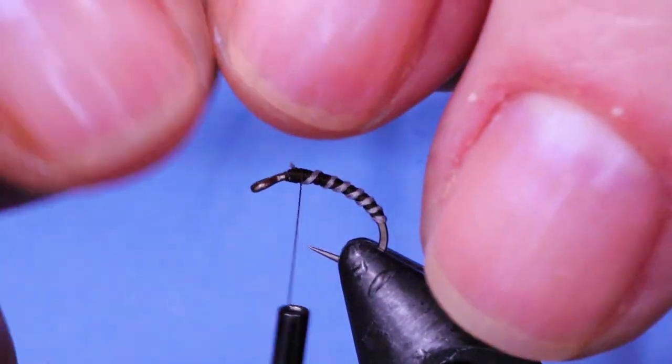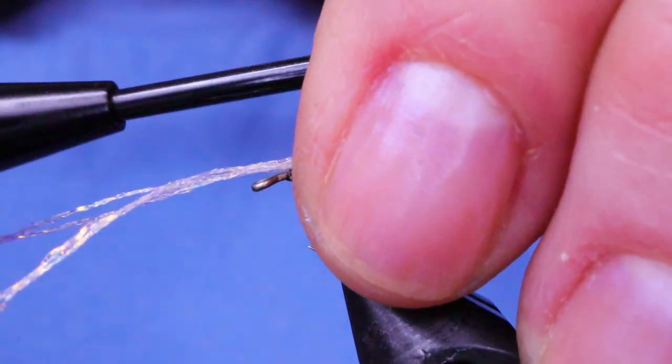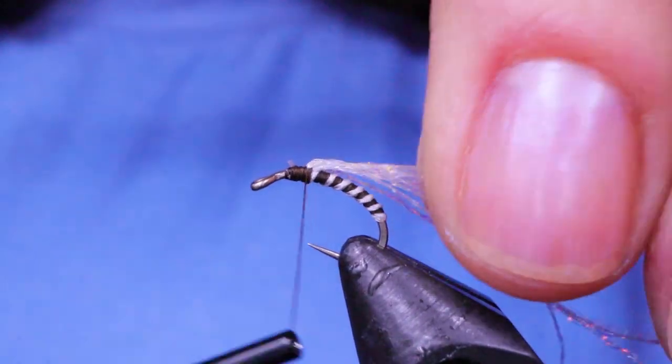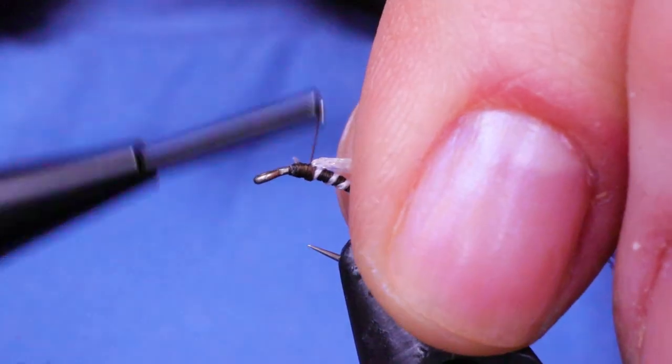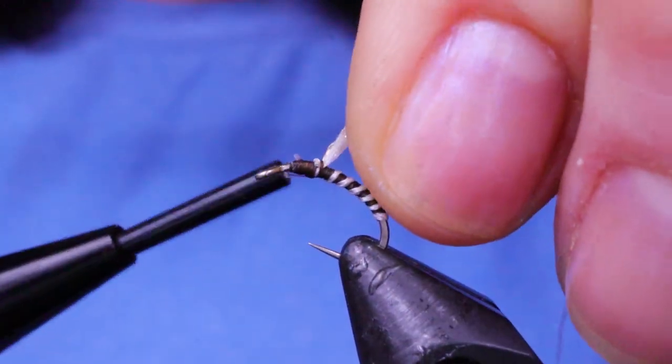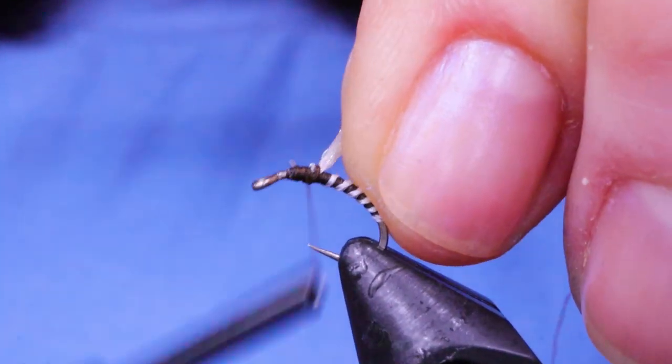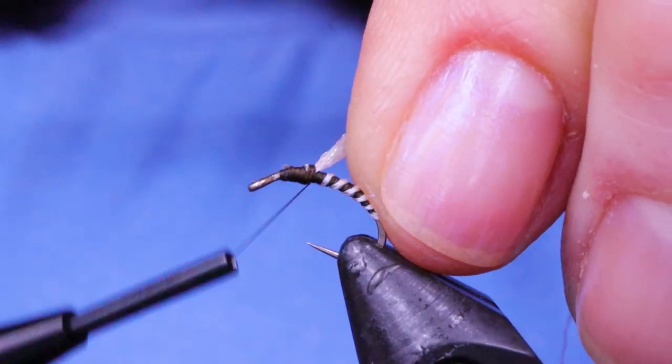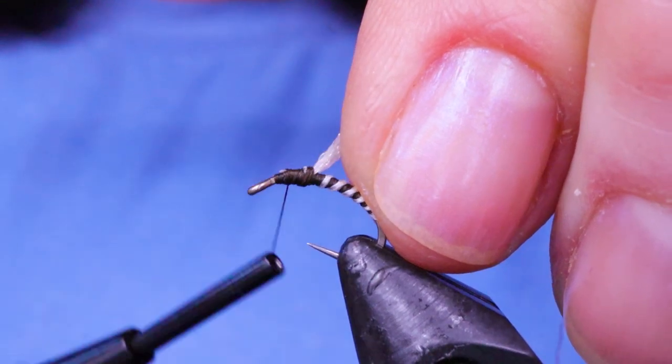I'm just going to tie it on top. I'm leaving it forward for a reason. Just tie that in and then fold this back. It should give you a nice little wing case on there. I'm just going to make a little thread base for my dubbing. Tie that up good.